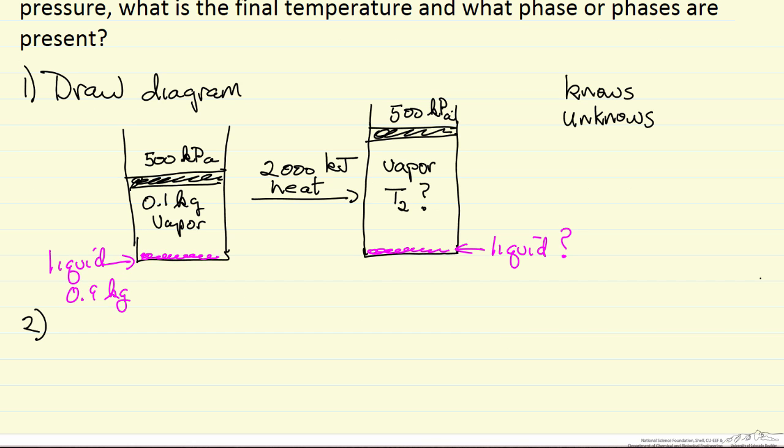So our second step then is to plan. In other words, plan how we're going to do the solution before we do it. That means picking a system, in this case it's the water, all of the water whether it's liquid or vapor in the piston and cylinder. And then this is an energy balance, so first law is the first thing we're going to do for a closed system.